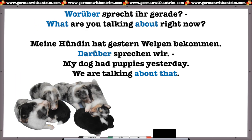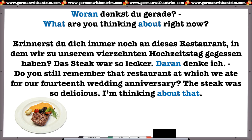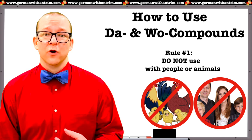Here are what they look like in sentences. "Worüber sprecht ihr gerade?" — What are you talking about right now? "Meine Hündin hat gestern Welpen bekommen. Darüber sprechen wir." — My dog had puppies yesterday. We're talking about that. "Woran denkst du gerade?" — What are you thinking about right now? "Erinnerst du dich immer noch an dieses Restaurant, in dem wir zu unserem vierzehnten Hochzeitstag gegessen haben? Das Steak war so lecker. Daran denke ich." — Do you still remember that restaurant where we ate for our fourteenth wedding anniversary? The steak was so delicious. I'm thinking about that.